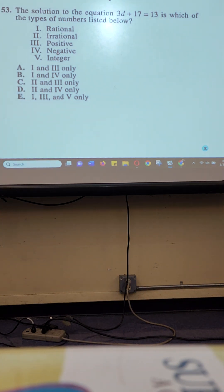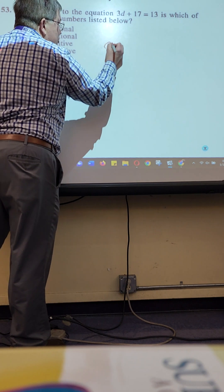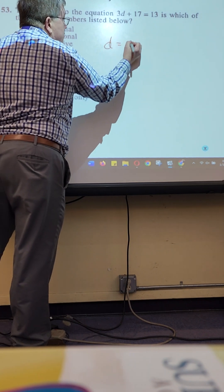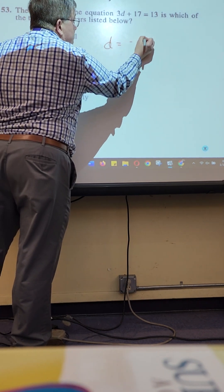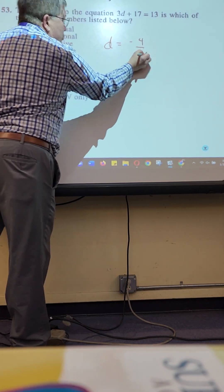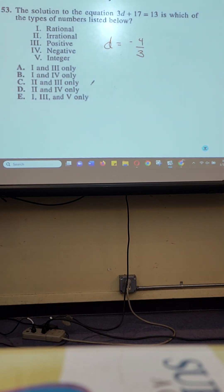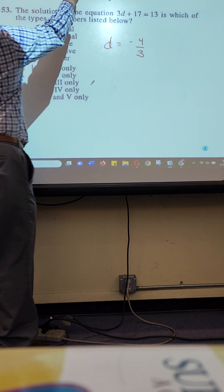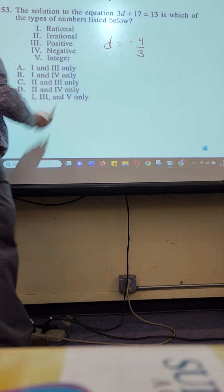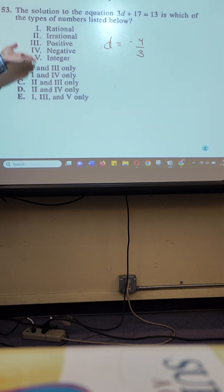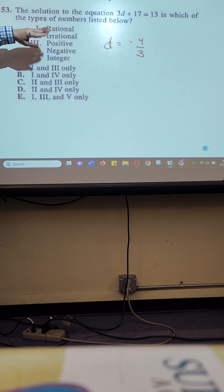First off, what is the solution to this equation? Did everybody at least do that much? D is equal to negative four-thirds. So we are simply asking what type of number is negative four-thirds.